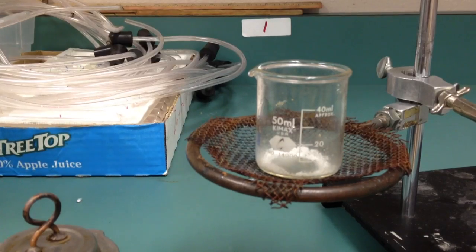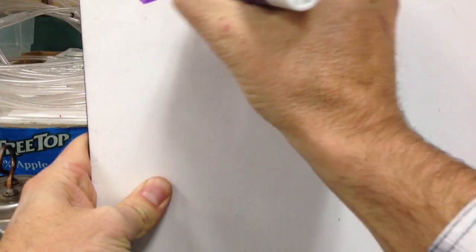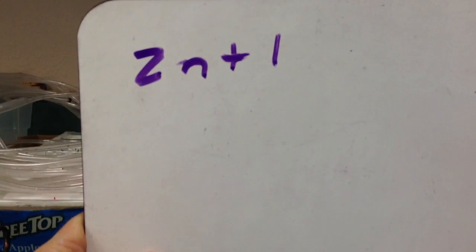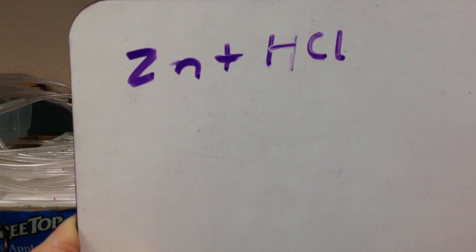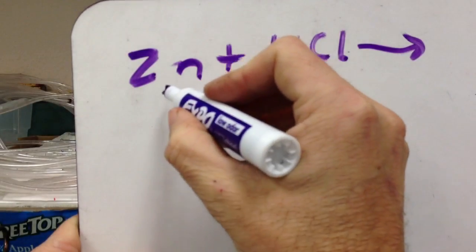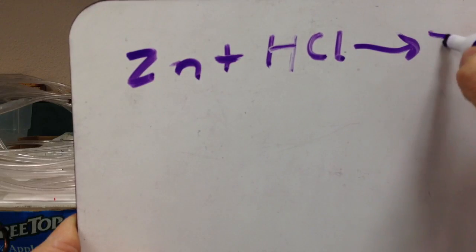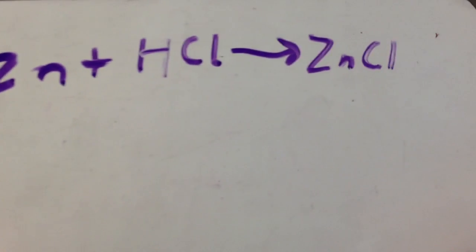So, real quick here, just to sort of recap for you what we did. We took zinc and we added it to hydrochloric acid, HCl. That's a hydrogen joined with a chlorine. Then, that reaction, this zinc doesn't like being alone. So, it grabbed this chlorine, became zinc chloride. That's the white powder you see remaining. Zinc chloride.